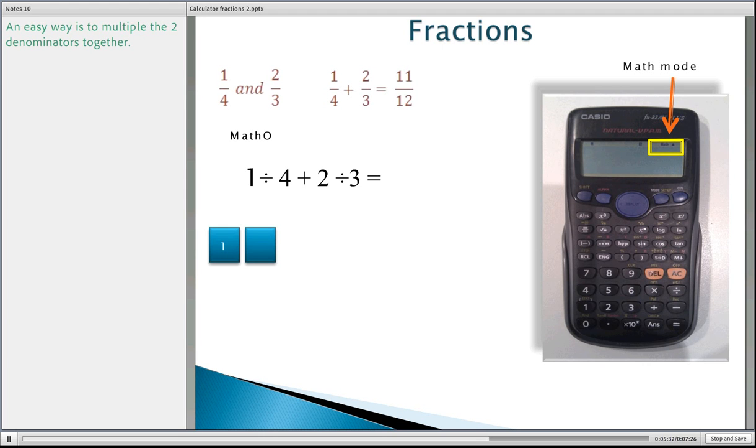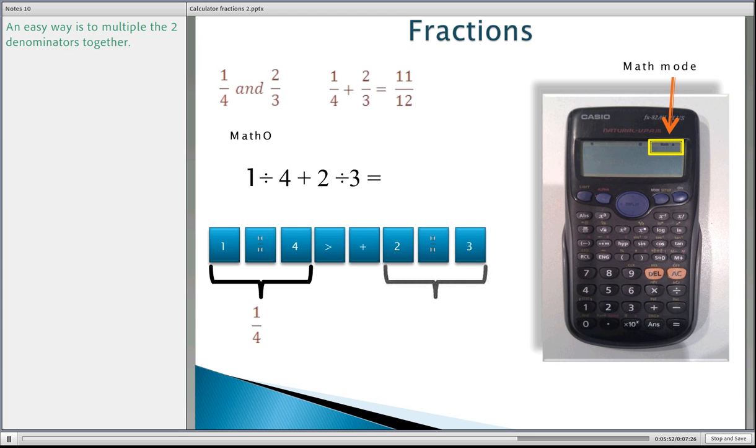So we go now one. Just watch the screen. We're going to use that button there just to put in a fraction. So one divided by four. And that's what your calculator should look like. Now that little button there is then on your calculator. Plus two. Look at the calculator. That symbol there. Three. So we're now actually saying your calculator should look like this here. One quarter plus two thirds equals eleven twelfths.